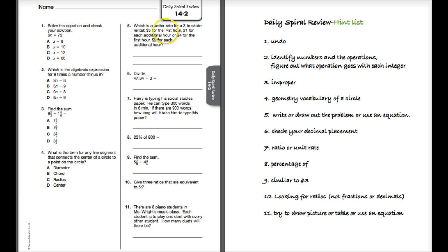So be aware that they are looking to skate for three hours and there are two different rates given to you: five dollars for the first hour and one for each additional hour, or is it cheaper, or is it a better rate to go four dollars for the first hour and two for each additional?